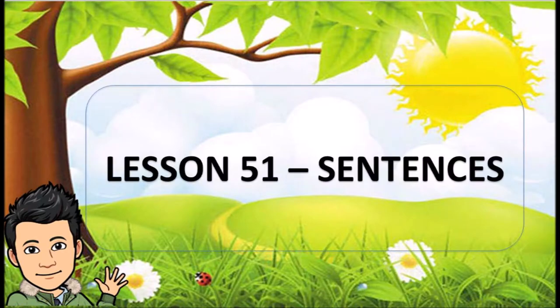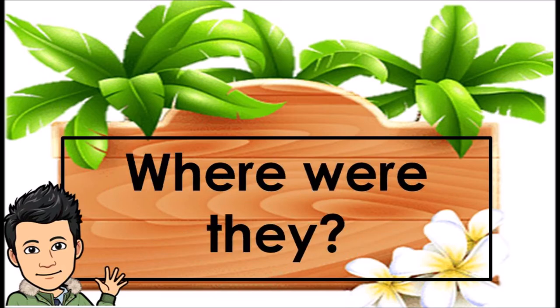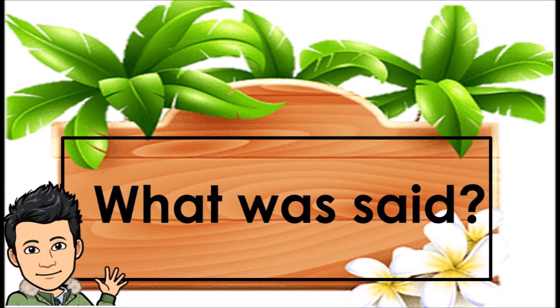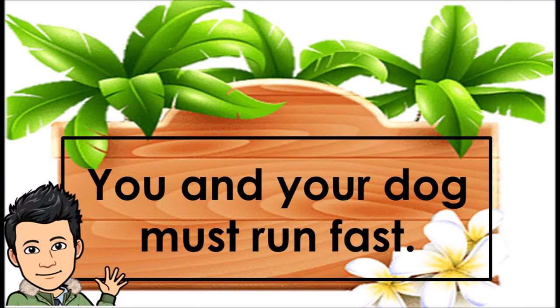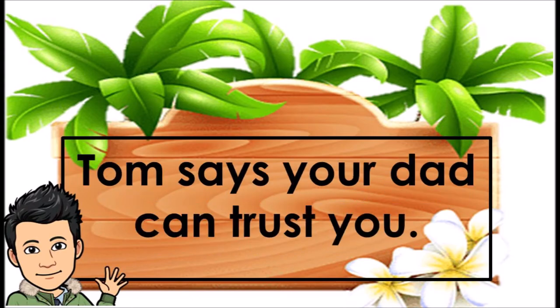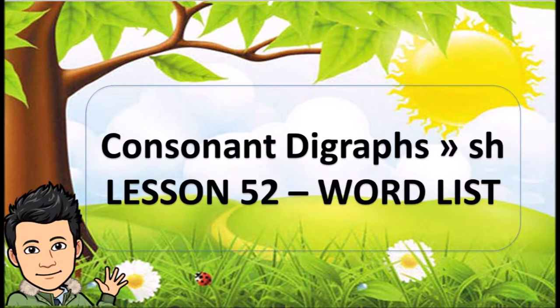Lesson 51 Sentences. I said, where were you? Where were they? What was said? You and I are the best. You and your dog must run fast. Tom says your dad can trust you. They said their dad and mom are strict.